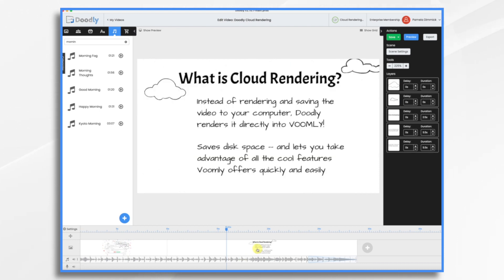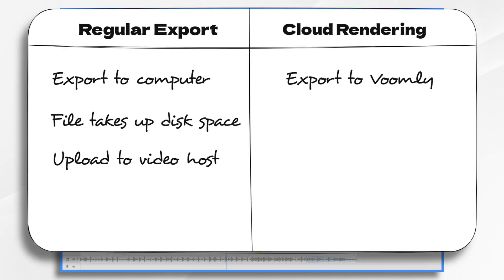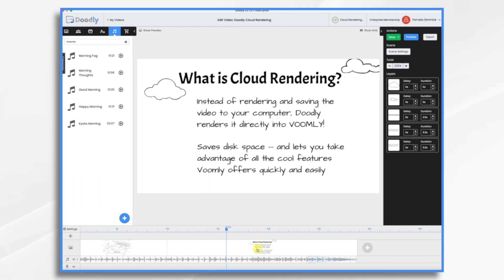So what is cloud rendering? Well, you know how you normally save your video and then you export it and it creates a file and it's stored on your computer. Cloud rendering dispenses with that. You no longer have to save it to your computer. Instead, it renders it and saves it directly into Voomly. And Voomly is a video hosting service — it's part of the same family that Doodly, Toonly, Takia, Pix, PeopleBuilder, and Voomly all belong to.